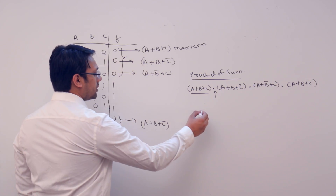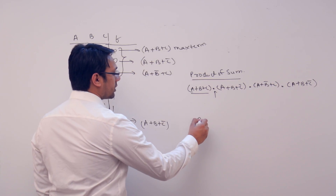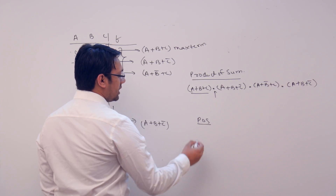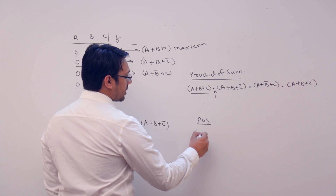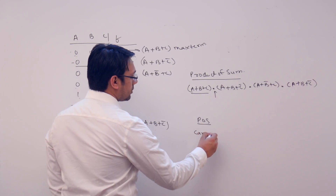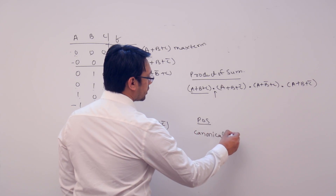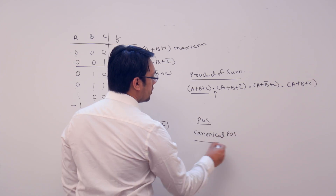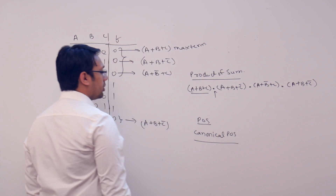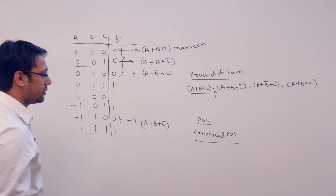We have two types of product of sum. Number one is a simple product of sum form, that is POS. The second one is a canonical product of sum form, also called canonical POS.